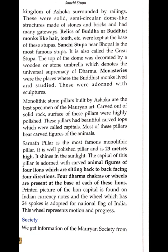The capital of the Sarnath pillar is adorned with carved figures of four lions sitting back to back facing four directions. Four Dharma chakras or wheels are presented at the base of each lion. The lion capital is printed on the Indian currency note, and the wheel with 24 spokes is adopted on the national flag of India, representing motion and progress.